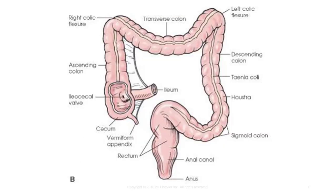There are three main turns that the colon takes between each of its four sections. The right colic flexure, also known as the hepatic flexure, has a sharp angle connecting the ascending and transverse colon. This flexure is more inferior to the left colic flexure due to the presence of the liver, which displaces it inferiorly.